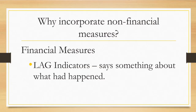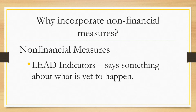So what can we do in order to prevent this from happening? This is where financial measures and non-financial measures differ. Financial measures tend to be lag indicators — an indicator is said to be a lag indicator if it says something about what had already happened. Return on investment is an example of a lag indicator because it measures performance in the year that has already happened. Meanwhile, non-financial measures tend to be lead indicators — they say something about what is yet to happen.